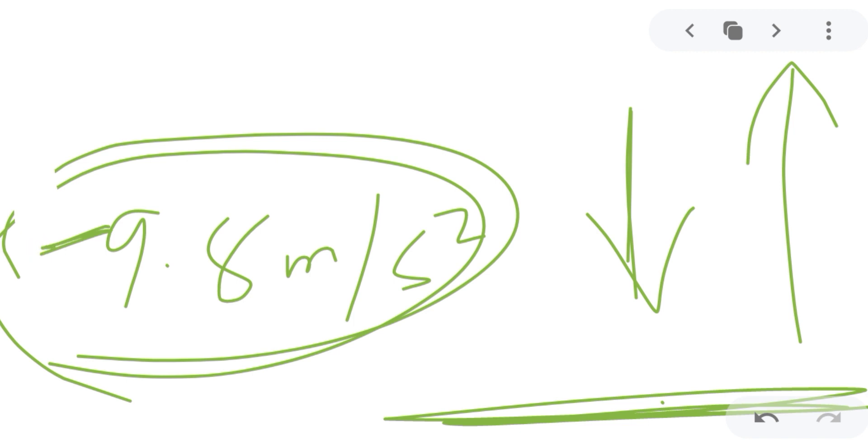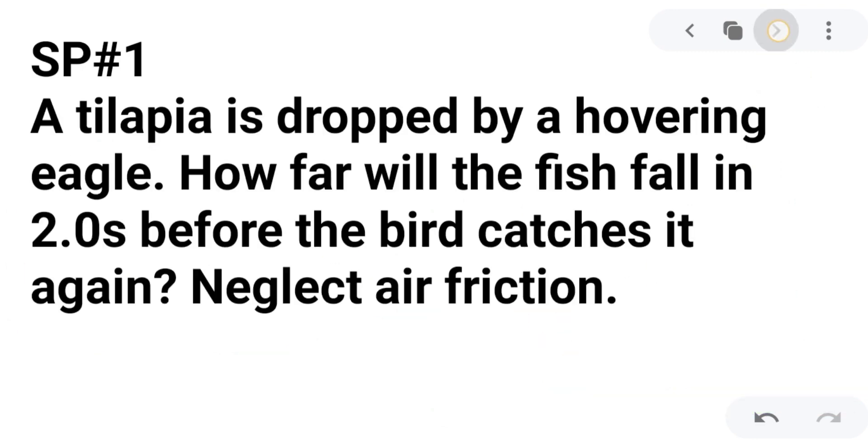So take note that the value of the acceleration due to gravity varies at different locations, particularly at different planets. But here on Earth, we will be denoting and using 9.8 meters per second squared as our acceleration due to gravity represented by small g. Now, for example, problem number one I have here related to the topic.